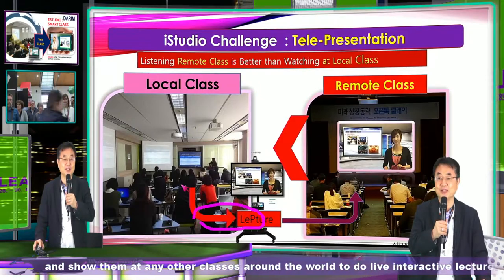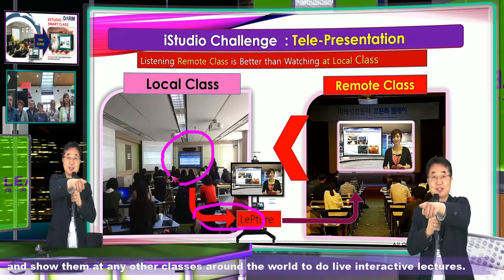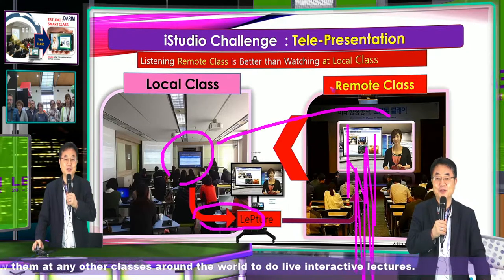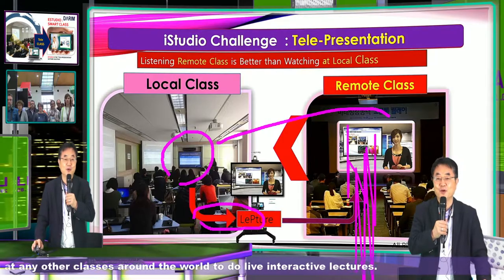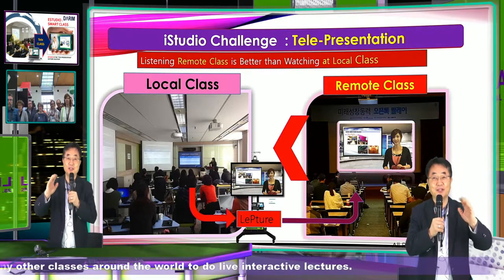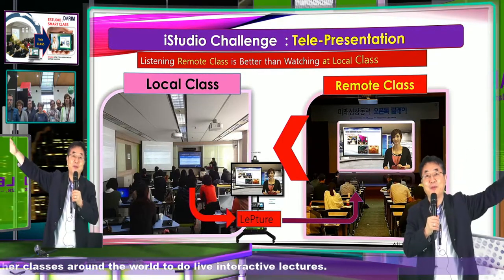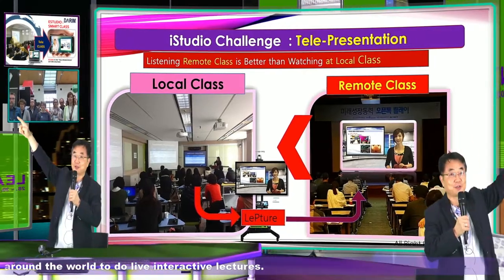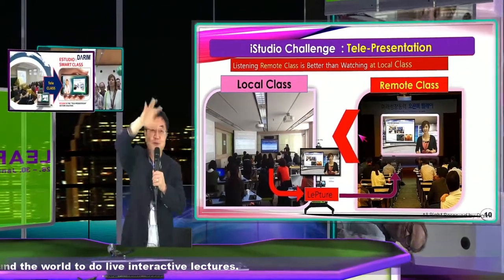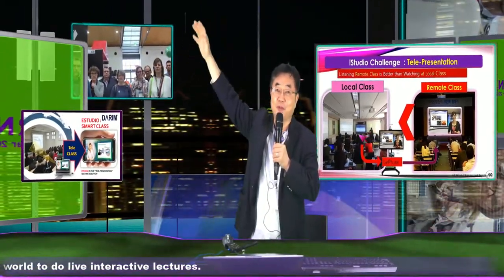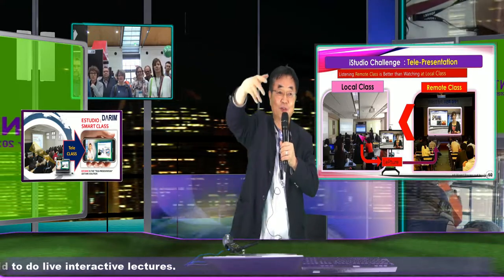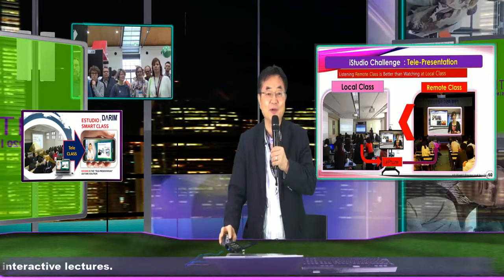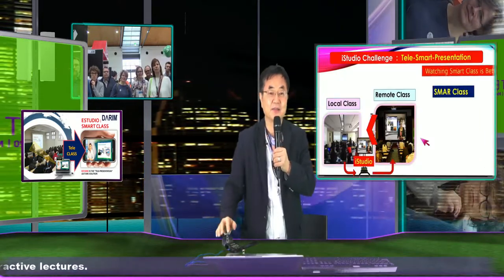Once you use this machine in the classroom, this output screen which you are watching can go to other classrooms. What we are claiming here is that watching this video is better than watching in a classroom that has a PowerPoint and teacher. When you sit in the classroom, you have to watch both the teacher and the teaching material. If you put this on the projector screen, every student will automatically see the teacher very big or see the presenting material. I call this machine a smart class.